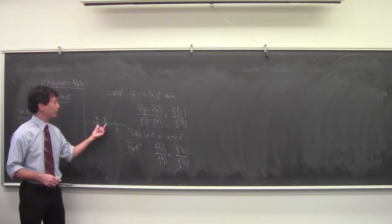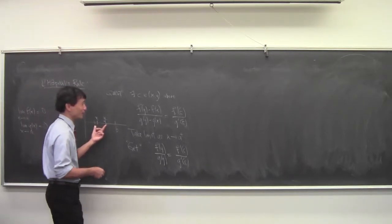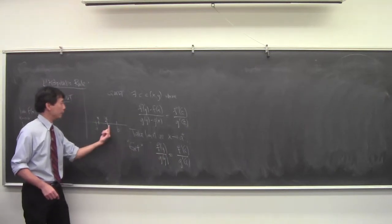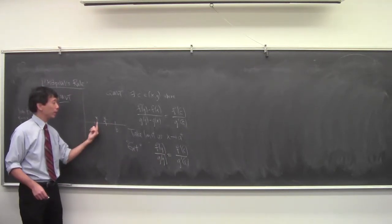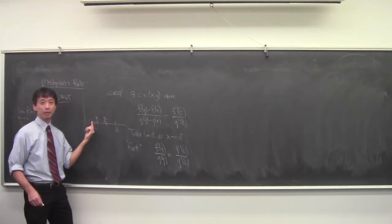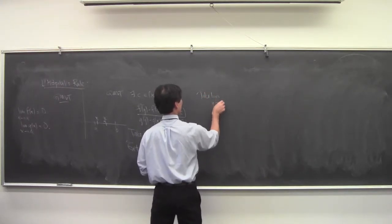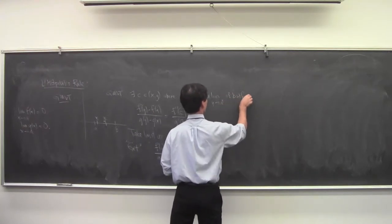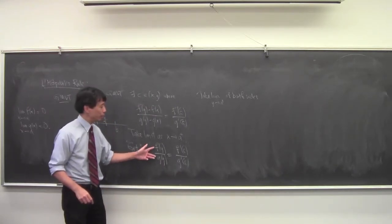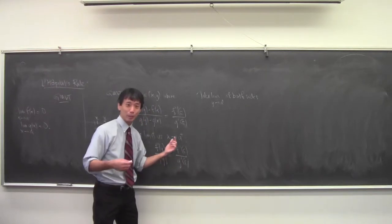Then let Y go to A from the right-hand side. As Y moves inward, C is trapped between A and Y, so as Y goes to A, C also goes to A. Taking the limit of both sides as Y goes to A, you get the limit of the ratio of the functions equals the limit of the ratio of the derivatives. This is the hand-wavy idea of the proof.